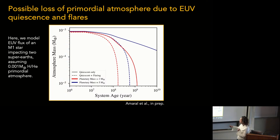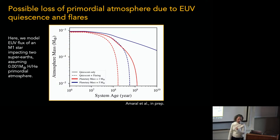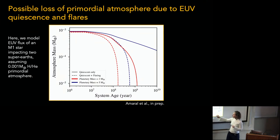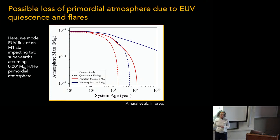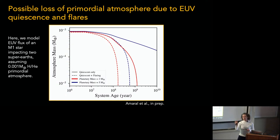The solid lines are quiescent evolution for those two mass planets, and the dashed lines include flares. According to her models, if you include flares, you pretty much destroy your primordial atmosphere. She's working on secondary atmospheres next — that's coming up soon.